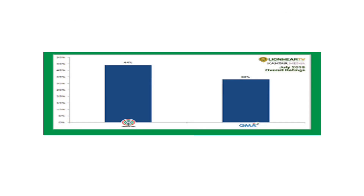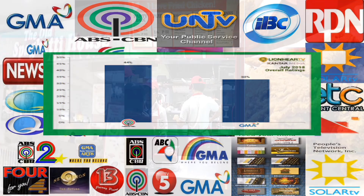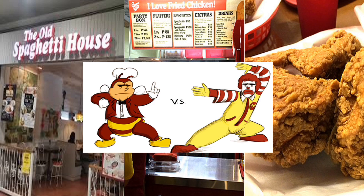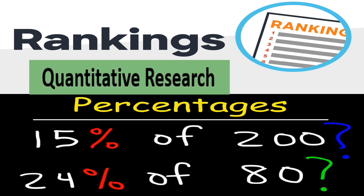Have you ever wondered how competing networks determine the satisfaction ratings of their viewers per television show aired in a specific time slot? Numbers — they truly project reality. Have you also asked yourself where the best spaghetti or fried chicken in town is? You may ask your friends. The most mentioned brand or store wins in your mind and gives you an idea what to choose. Numbers — they represent meaning and connect ideas.